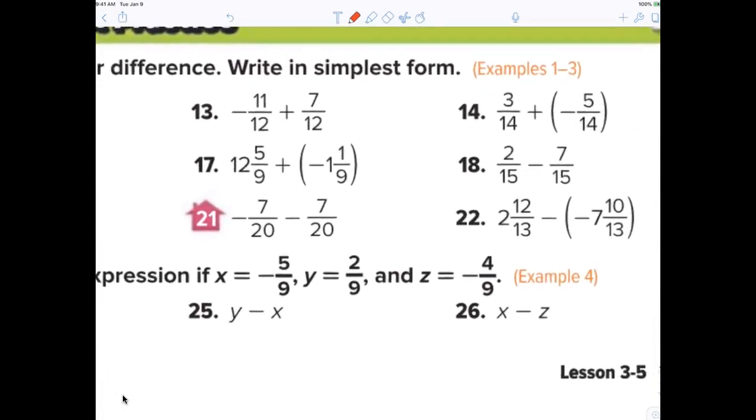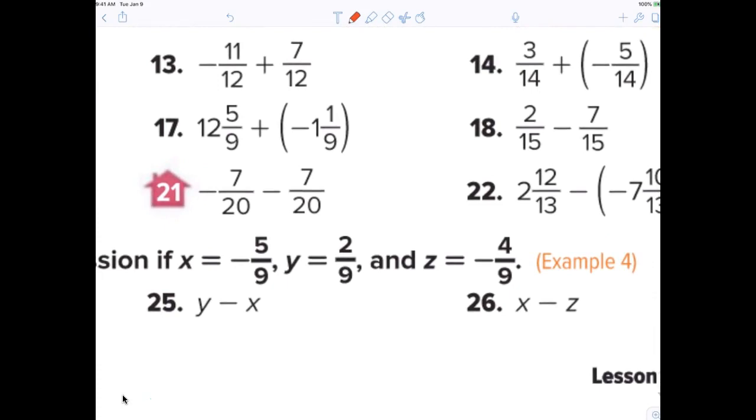Negative 11 plus 7 is negative 4 over 12, which reduces to negative 1/3.